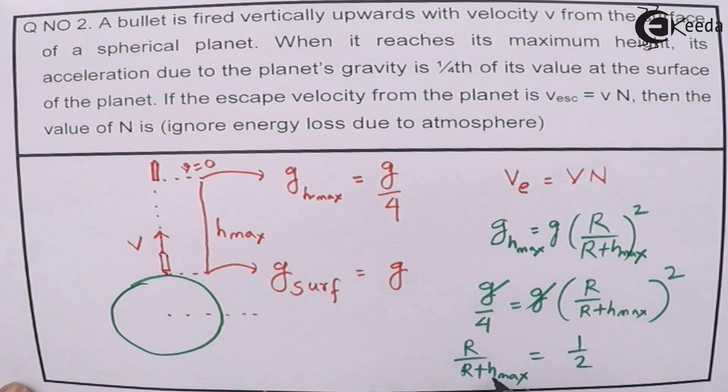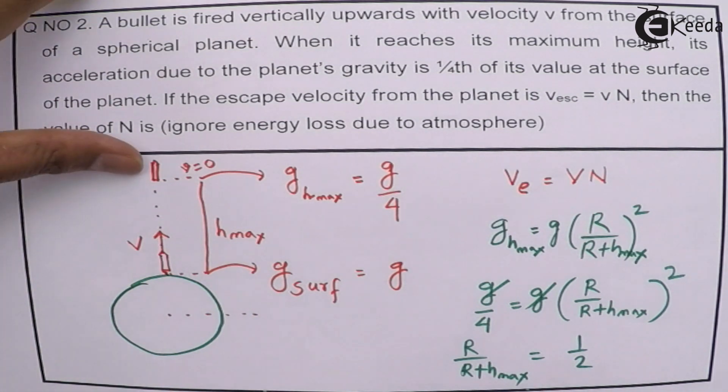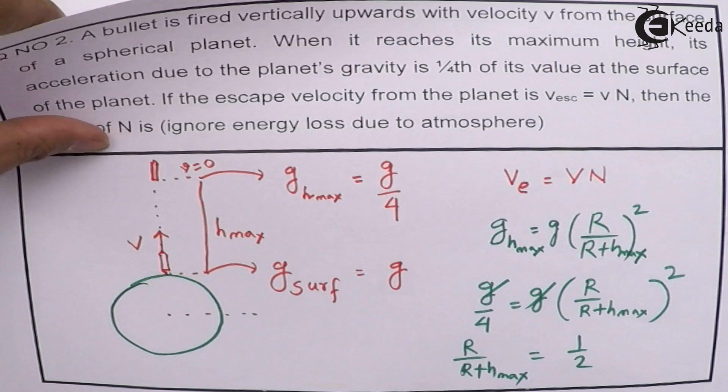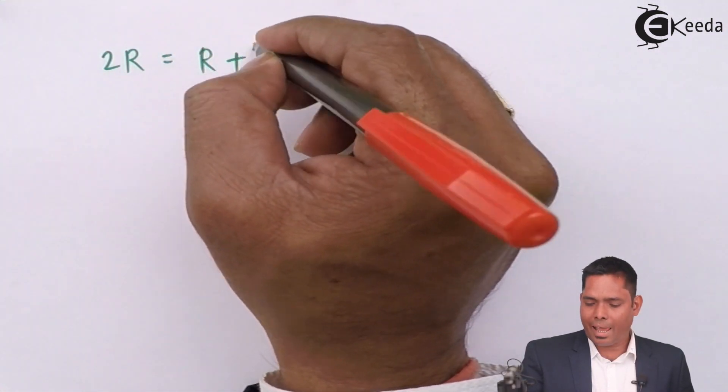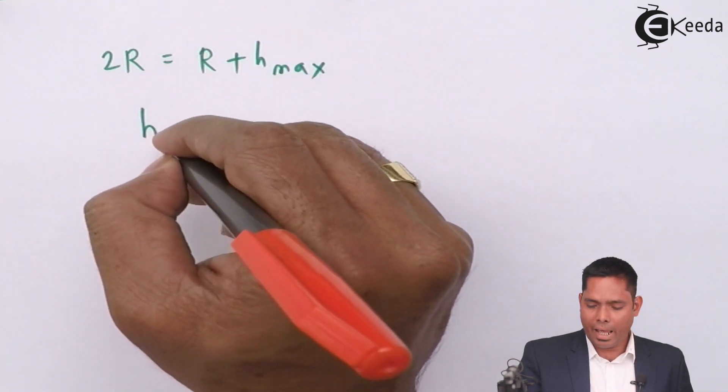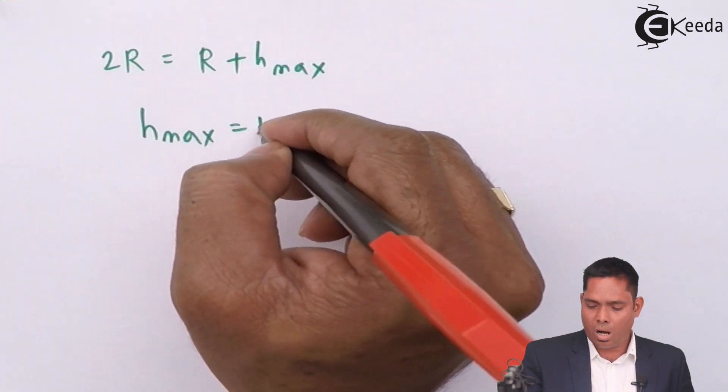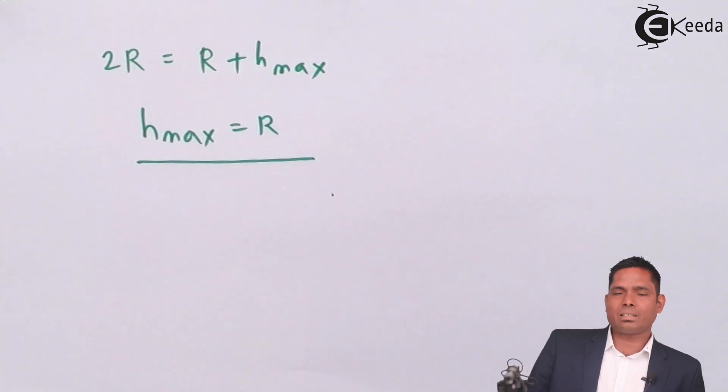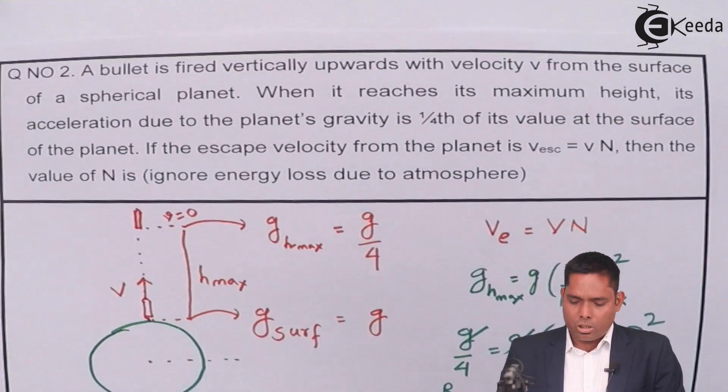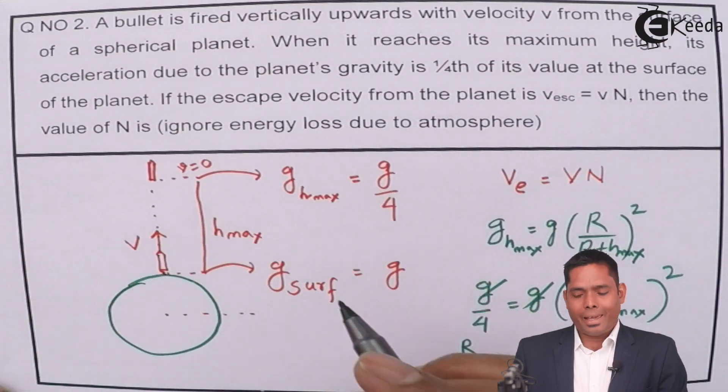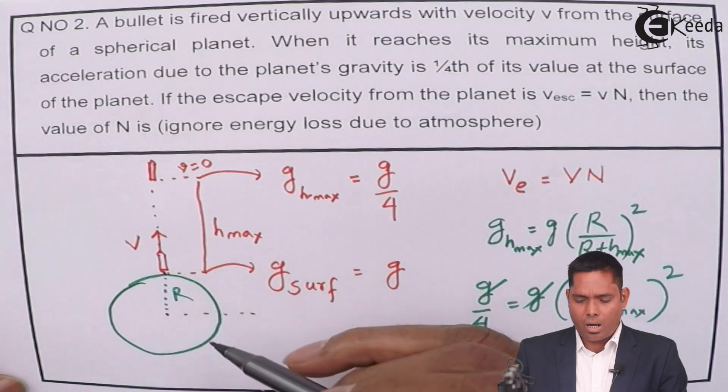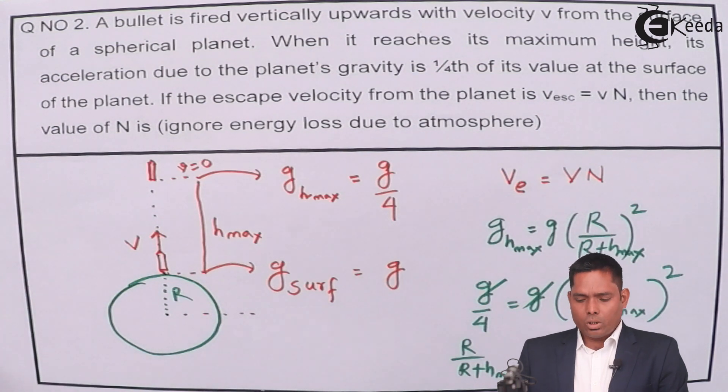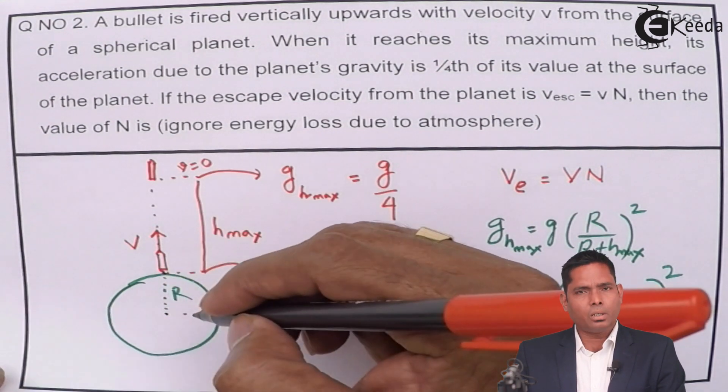Cross multiplying, 2R = R + h_max. From here, h_max becomes R. That means the bullet goes to a height h_max which is equal to the radius of this planet R. The bullet goes to a height equal to the radius of the planet.